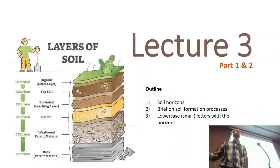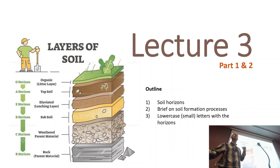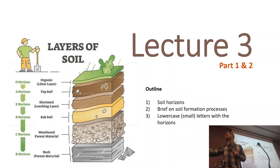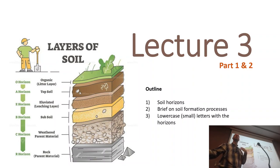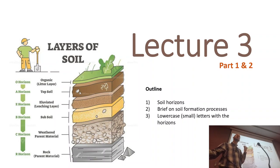Today we will talk about soil horizons. What are soil horizons? Soil horizons are the layers of soil, and they are the main way in which we classify and understand the properties of soils. By looking at how the soil is layered and the properties of each layer, we can figure out the formation of that soil, how old it is, what was the type of parent material, and what type of hydrological cycle is happening on that soil.